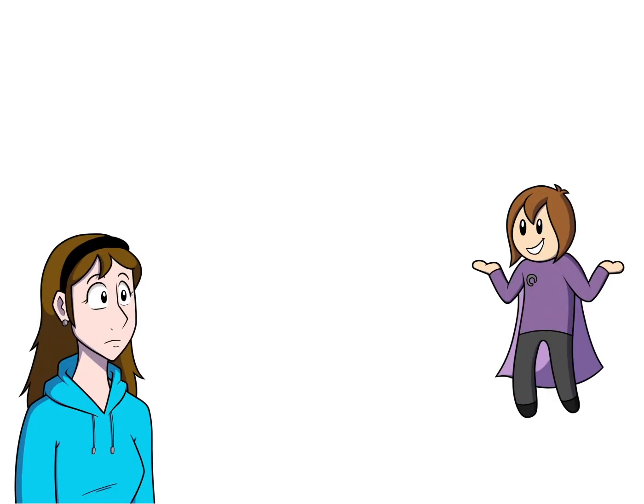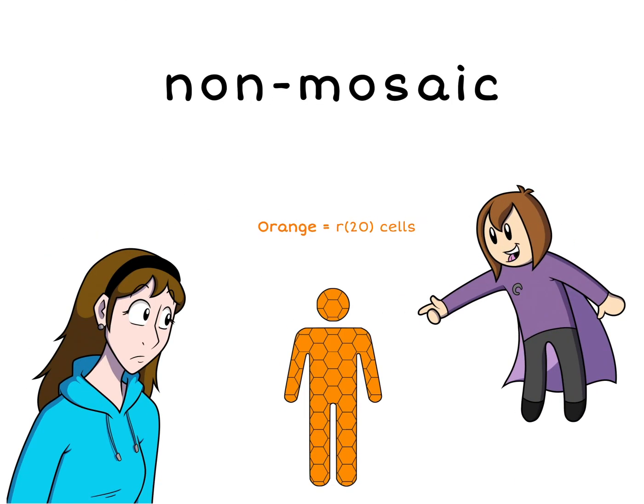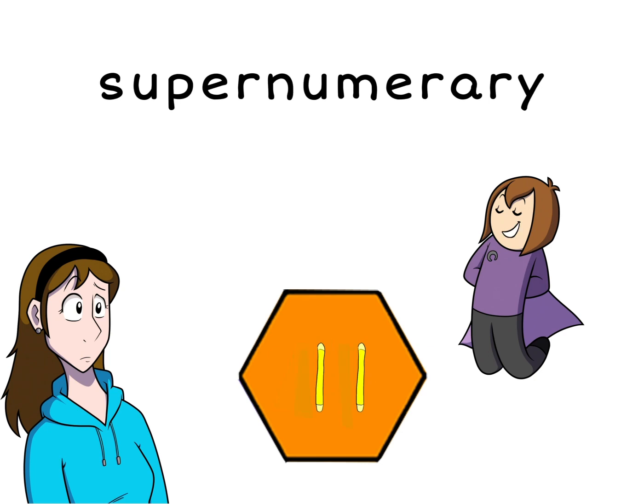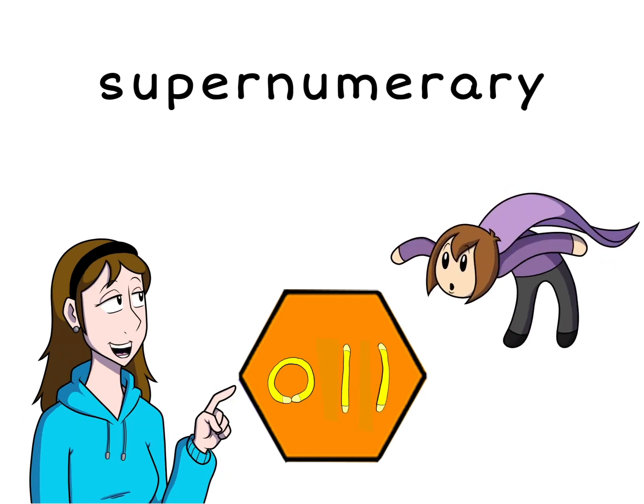There are different types of R20. There's non-mosaic, where every cell in a person's body has the ring 20 chromosome. Mosaic is perhaps the most common, where only some of the cells have a ring chromosome. There's also supernumerary, where an extra ring is thrown in with the existing two chromosomes.